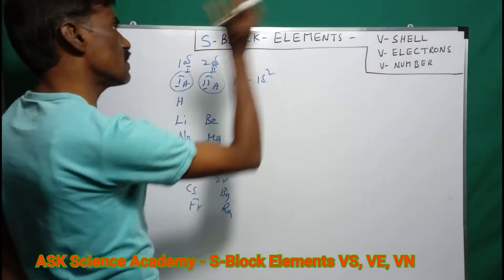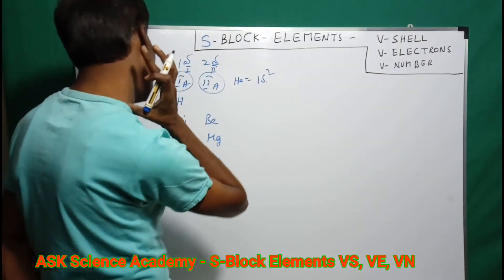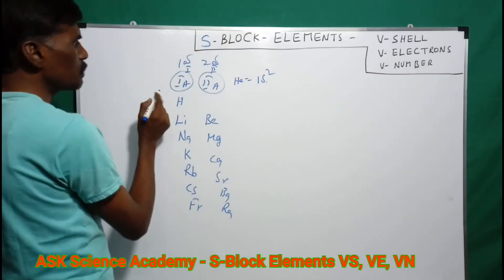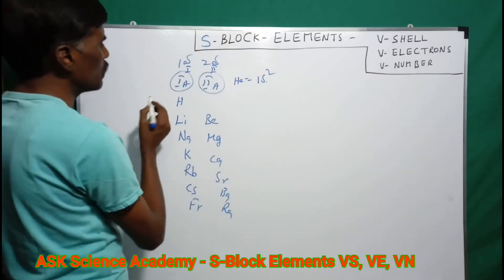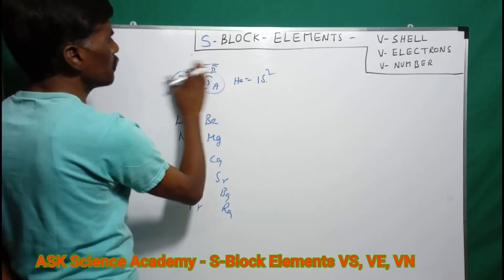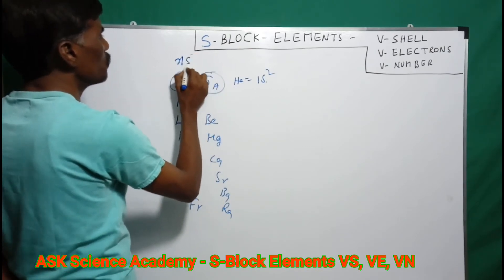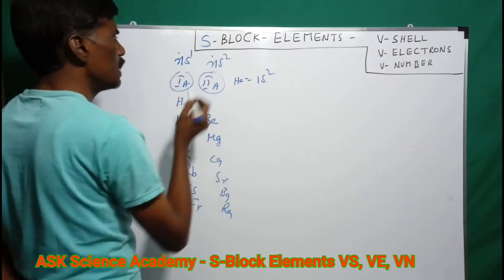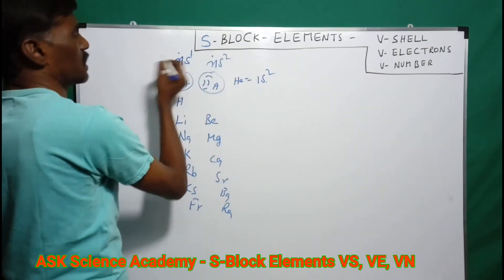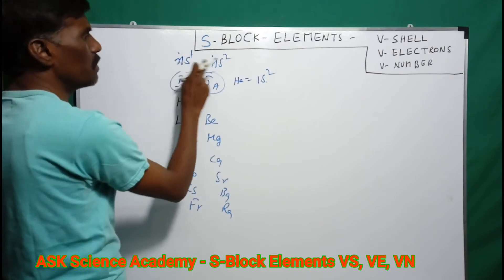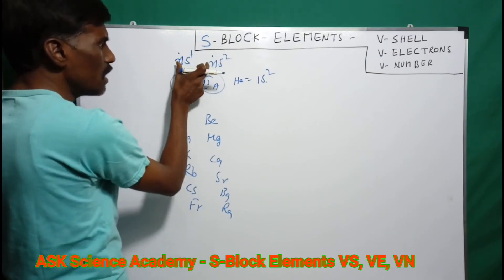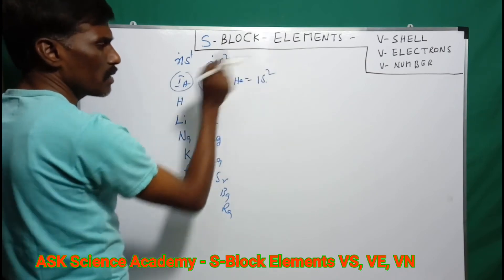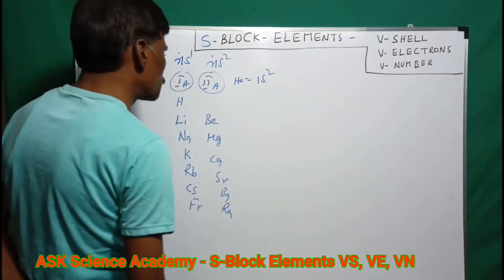These are the S-block elements, and these S-block elements have valence shells. The general configuration for Group 1 is ns1, and for Group 2 is ns2. Here 'n' means the shell number, also called the principal quantum number.